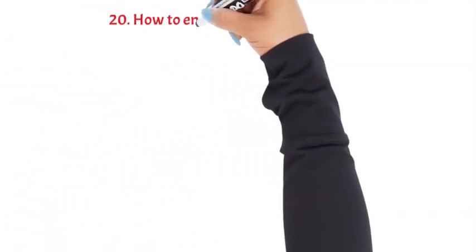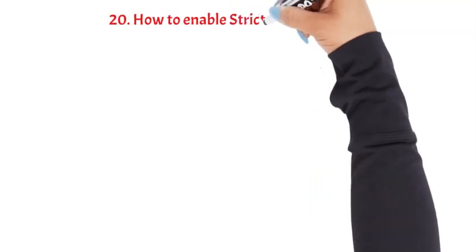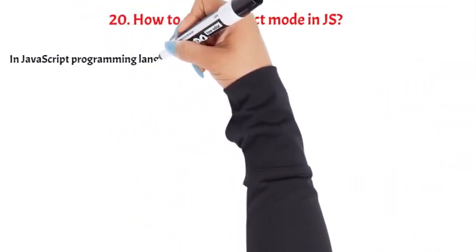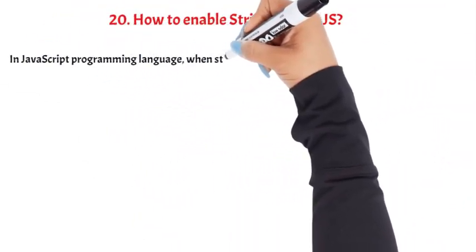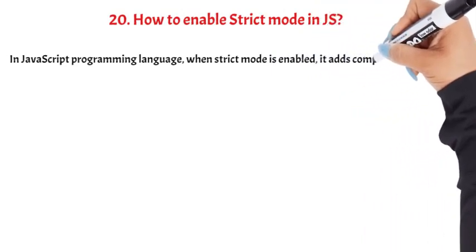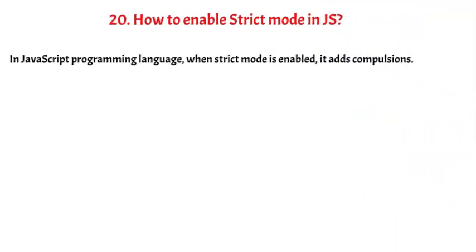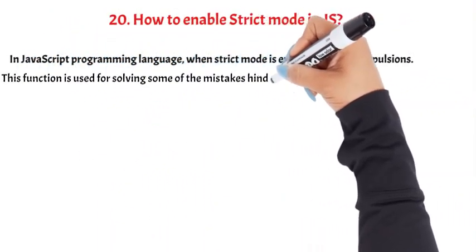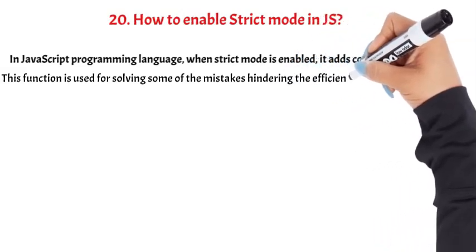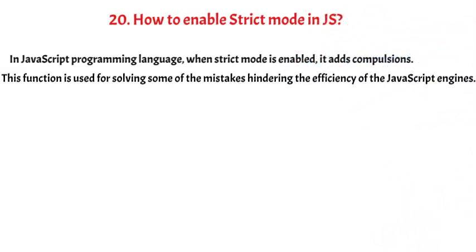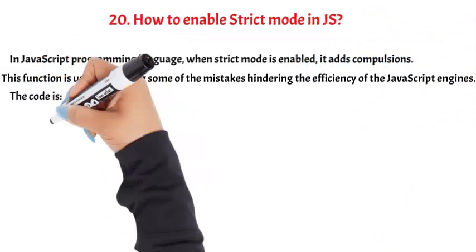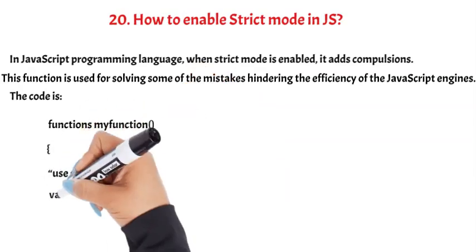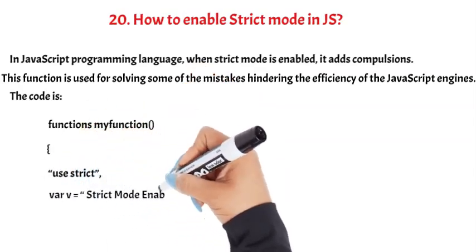Question 20: How to enable strict mode in JS. In JavaScript, when strict mode is enabled, it adds certain compulsions. This is used for solving some of the mistakes that hinder the efficiency of JavaScript engines. The code is: function myFunction() { 'use strict'; var v = 'strict mode enabled'; }.